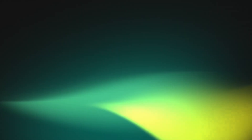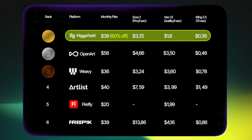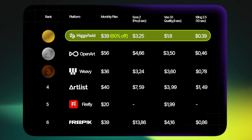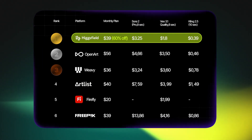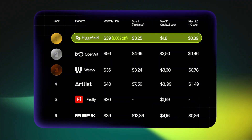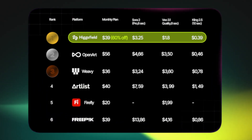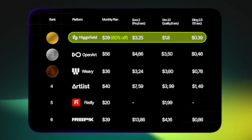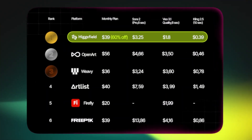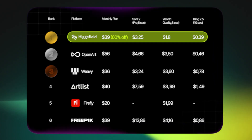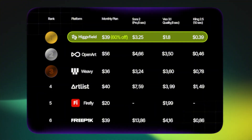Another advantage of using HiggsField is the pricing. Based on their official comparison chart, HiggsField currently offers one of the lowest price points in the market, especially when compared to platforms like OpenArt, Weavey, Artlist, and Adobe Firefly. HiggsField ranks first overall. Their monthly plan sits at only $39 with a 60% discount, and even the cost per generation — whether it's Sora style, Veo style, or Kling style — is noticeably lower than every other platform on the list. Platforms like OpenArt, Weavey, and Artlist are all more expensive, and some of them are more than double the cost per generation. So if you're looking for the most affordable place to generate high-quality AI images, HiggsField is clearly leading in pricing right now.